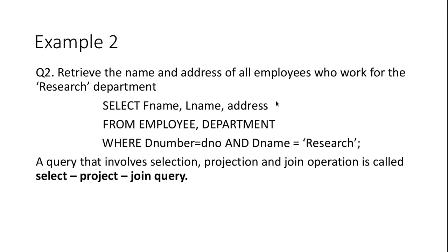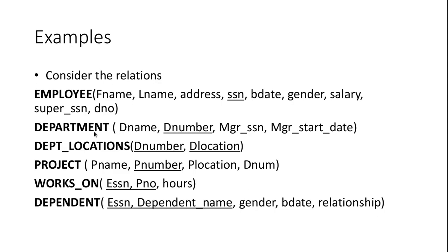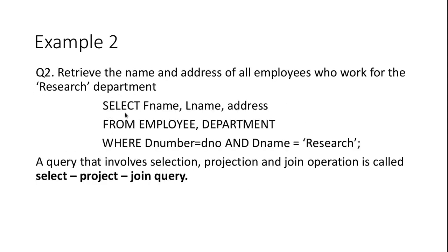Next example: Retrieve the name and address of all employees who work for the Research department. Here, the name and address of employees are in the Employee table, and we have to check whether the employee works in the Research department. Since DepartmentName is given in the Department table, we have to join the Employee and Department tables. The query is: SELECT FirstName, LastName, Address FROM Employee, Department WHERE...